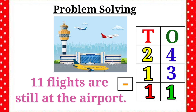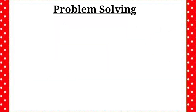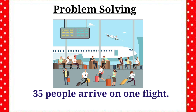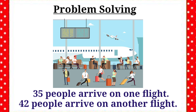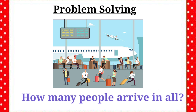Let's see the next example. 35 people arrive on one flight and 42 people arrive on another flight. The question is, how many people arrive in all? Ok, here, what will we do? Addition.